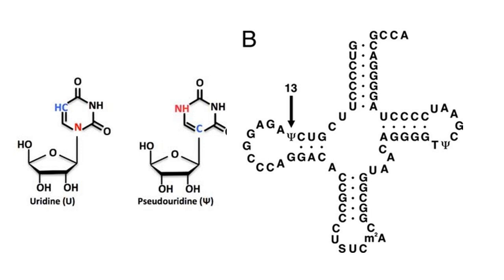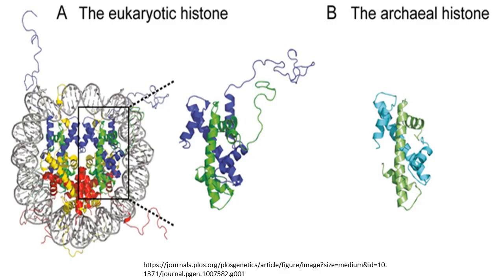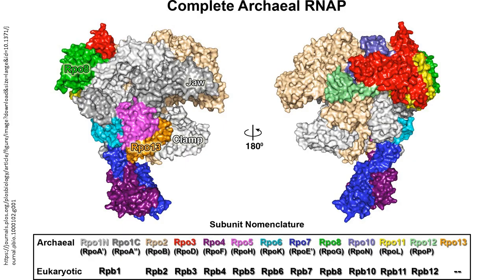Although archaeobacterial ribosomes are 70S like eubacterial ribosomes, electron microscopic studies show that their shape is quite variable and sometimes differs from both eubacteria and eukaryotic ribosomes. Their elongation factor 2 reacts with diphtheria toxin like the eukaryotic factor EF2. Some archaeobacteria, such as many methanogens, differ from other prokaryotes in having histone proteins that bind with DNA to form nucleosome-like structures. Archaeobacterial DNA-dependent RNA polymerases resemble the eukaryotic enzymes — they are large, complex enzymes insensitive to the drug rifampin.